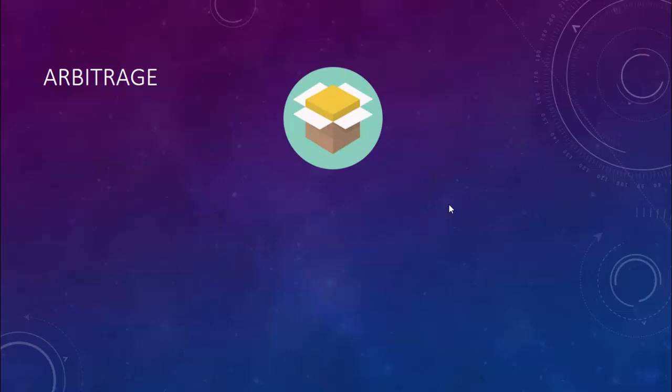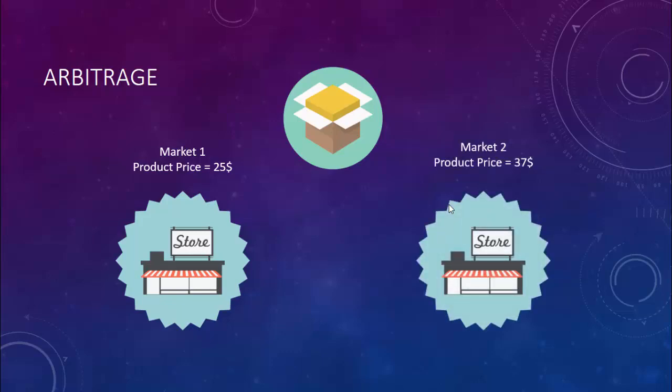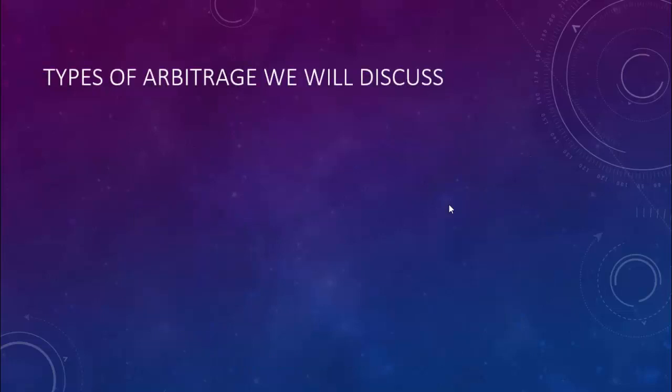Let me explain exactly how arbitrage works. We have a product — let's say an iPhone, a Samsung phone, or anything like that. This product is sold in market one at $25 and in market two at $37. Arbitrage is practically buying from market one and selling in market two, profiting from the different price points. The profit is market two price minus market one price — which is $12. It's a very simple business model: the classic formula of buy for less, sell for more.